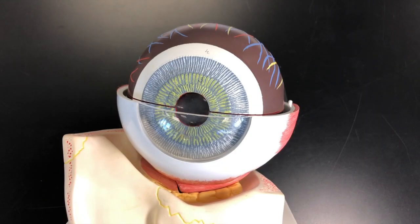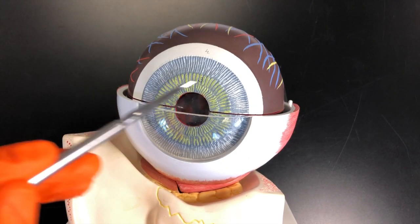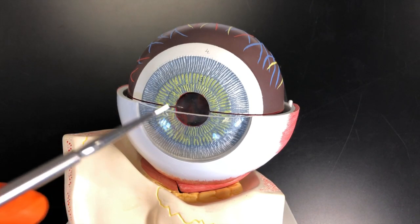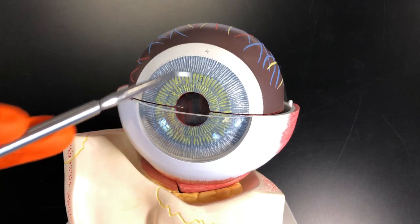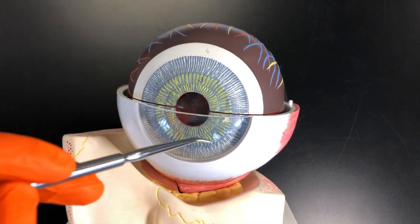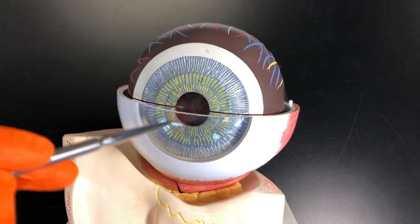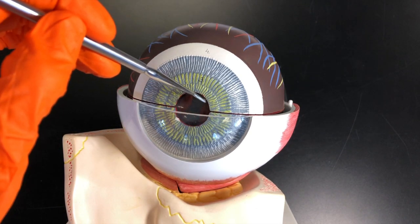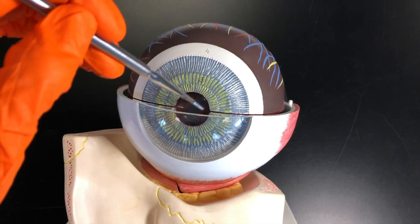And then lastly, for the vascular tunic, we have the iris, which is known as the colored portion of your eye. The colored part comes from the melanocytes that are in here. And then we also have this opening called the pupil.